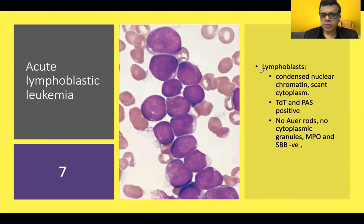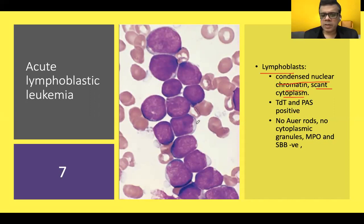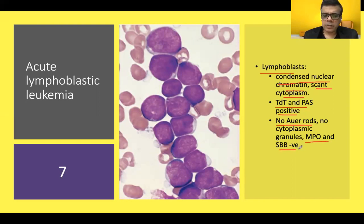Regarding lymphoblast morphology: lymphoblasts have condensed nuclear chromatin and scant cytoplasm — a differentiating feature from myeloblasts, which have mild to moderate cytoplasm. Lymphoblasts show a very high N:C ratio and condensed chromatin, compared to the open, diffuse chromatin pattern in myeloblasts. TdT and PAS are positive; Auer rods are absolutely absent. MPO and Sudan Black, characteristically positive in myeloblasts, are negative in lymphoblasts.